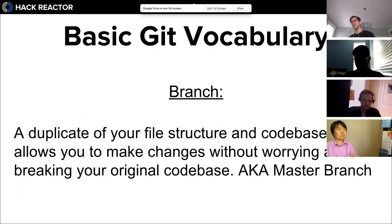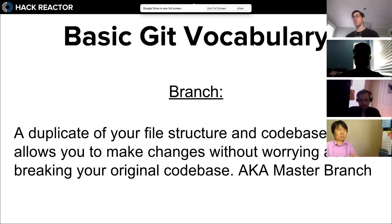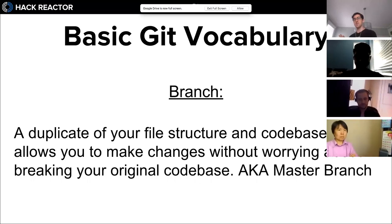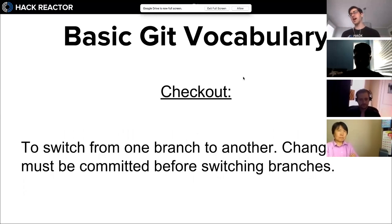A 'branch' is a duplicate of your file structure and code base that allows you to make changes without worrying about breaking the original. Let's say you're working on an application and want to create a new feature, but you're not sure if it's going to work or break something else. You create a new branch - it has all the same files as before, but a separate commit history. You can switch back and forth between branches. 'Checkout' is the command you use to jump back and forth between branches. 'Clone' is the command you use to pull down a repository from GitHub to your local machine.